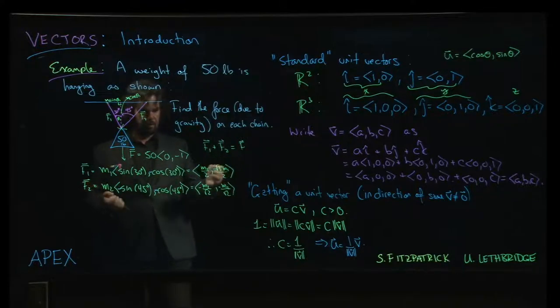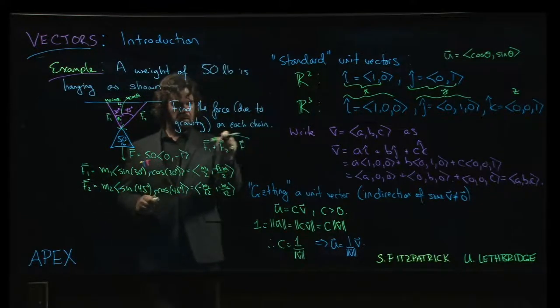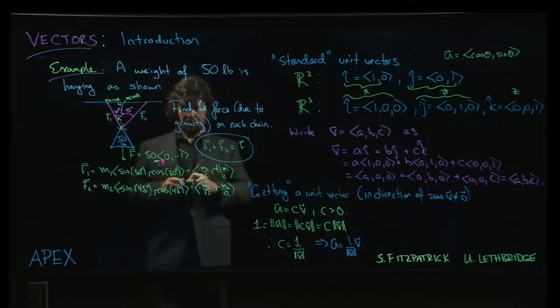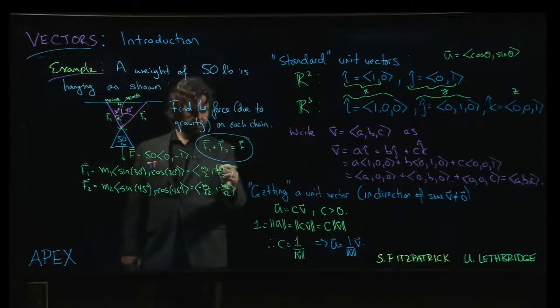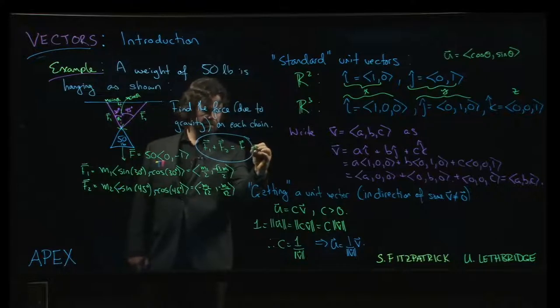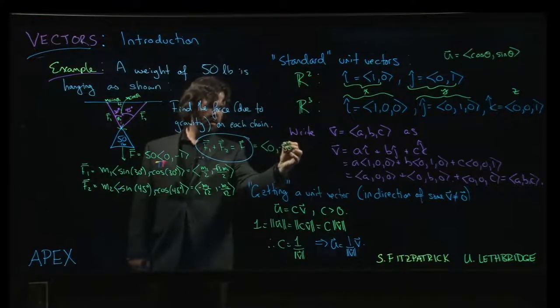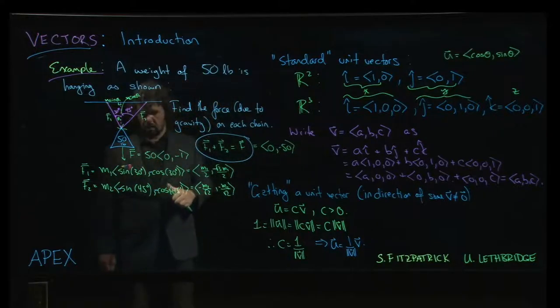And so now we get to this requirement here, F1 plus F2, they have to give you F. All right, so, and F, oh, F is here, right? So F is, again, it's 0 and negative 50, okay?